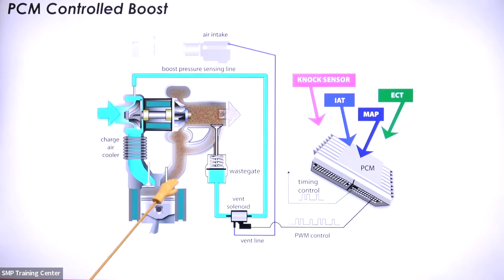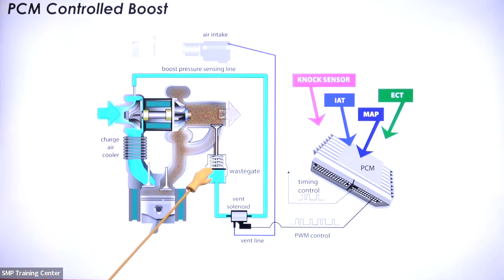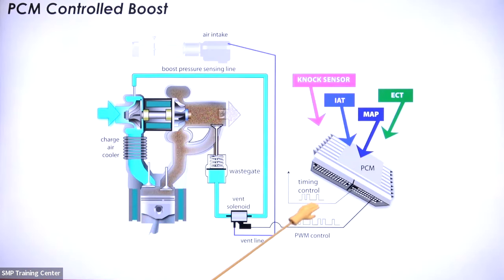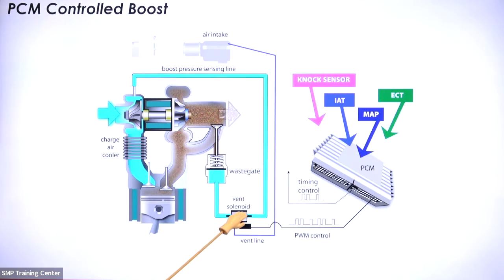We have our same system — exhaust out, air in, our wastegate controlling that boost pressure. The only difference is now we have the PCM monitoring multiple components and PIDs to determine when that solenoid needs to do its job to control the wastegate. Fairly simple.